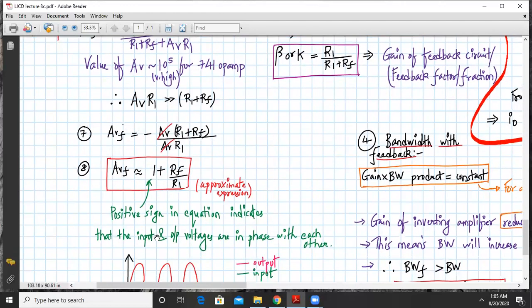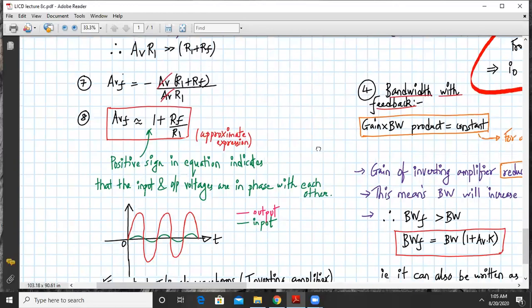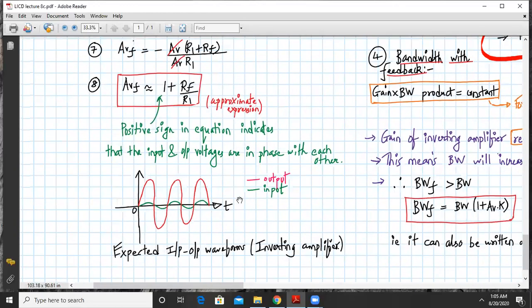Here there is no negative sign. The positive sign in the equation indicates that the input and output are in phase with each other. So that care we have to take. Here is my sample input and output waveforms; they are in phase but the output is having a gain magnitude here.